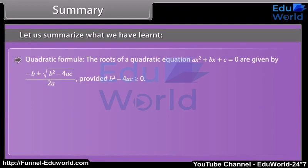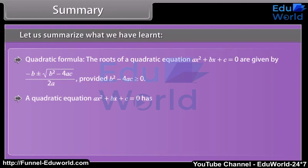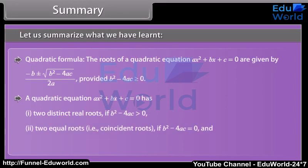Quadratic formula. The roots of a quadratic equation ax squared plus bx plus c equals zero are given by (minus b plus or minus square root of b squared minus 4ac) over 2a, provided b squared minus 4ac is greater than or equal to zero. A quadratic equation has: two distinct real roots if b squared minus 4ac is greater than zero; two equal (coincident) roots if b squared minus 4ac equals zero; and no real roots if b squared minus 4ac is less than zero.